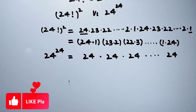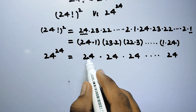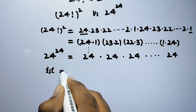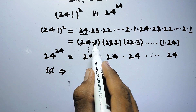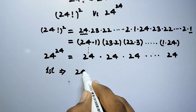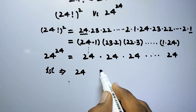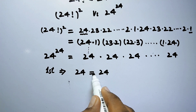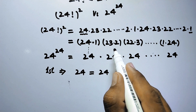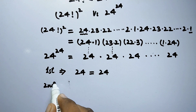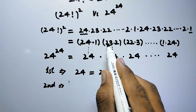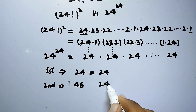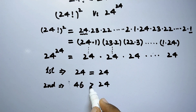Let's compare the groups of each series. For group 1: 24 times 1 equals 24, compared to 24. Both are equal. For group 2: 23 times 2 equals 46, compared to 24. So 46 is greater than 24.